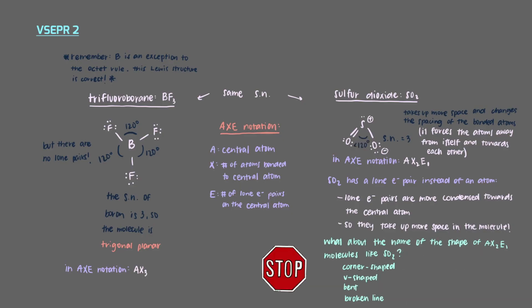What about the name of the shape of AX2E1 molecules like SO2? All of these names would kind of make sense, but the name chemists give it is bent. After all, you might think that a central atom with two terminal atoms would be linear, right? Well, it looks like someone actually bent the molecule.